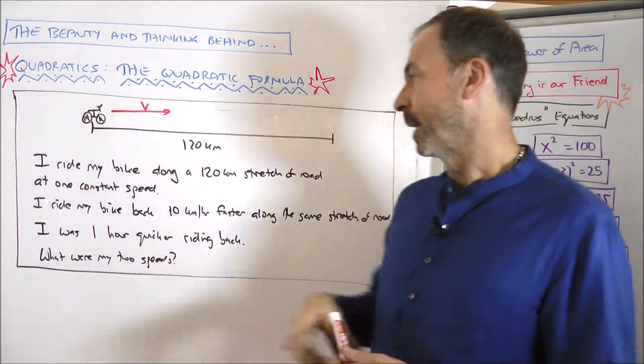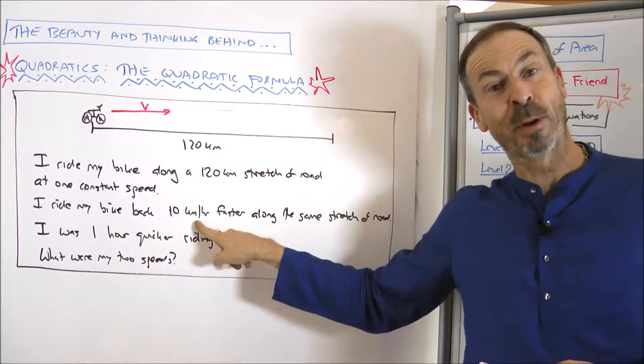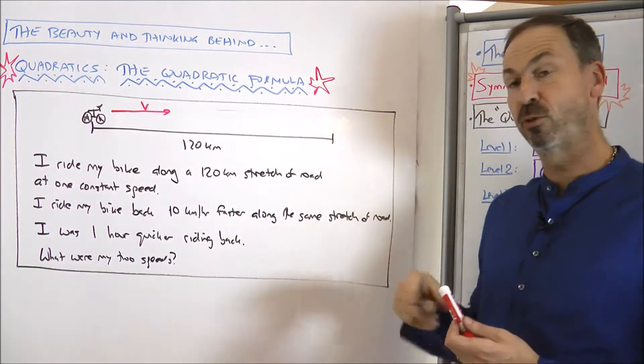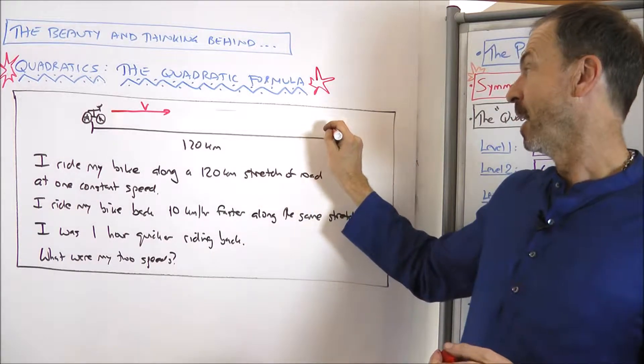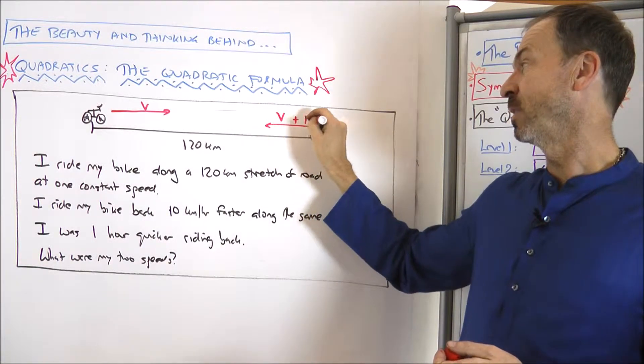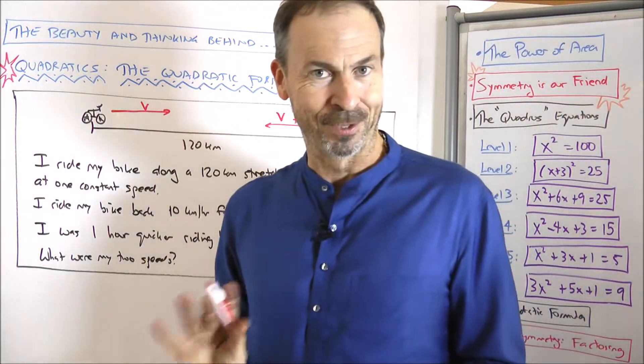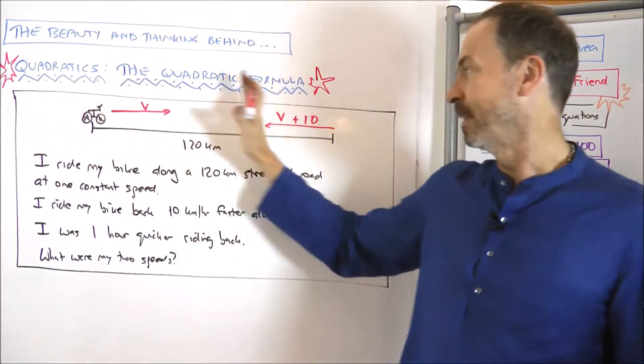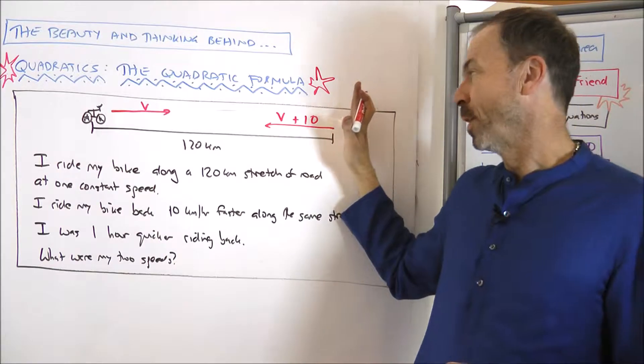And then coming back, I ride my bike back 10 kilometers per hour faster along the same stretch of road. So coming back, I'll do the same stretch of road, but my velocity will be V plus an extra 10 kilometers per hour. Got that? So one constant speed this way, and then one constant speed back.